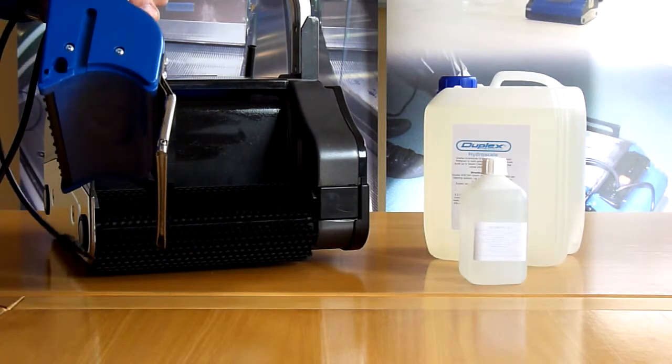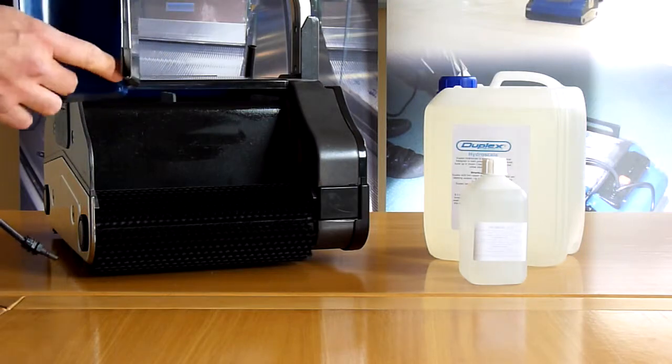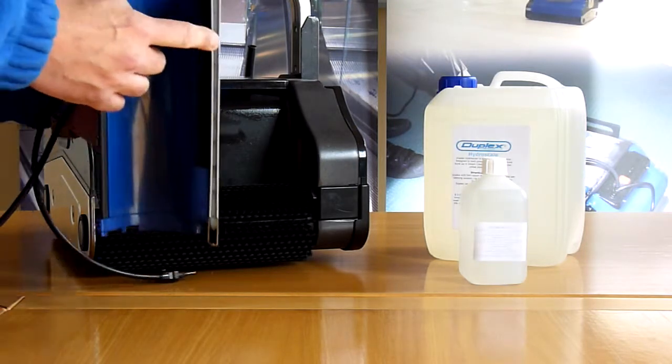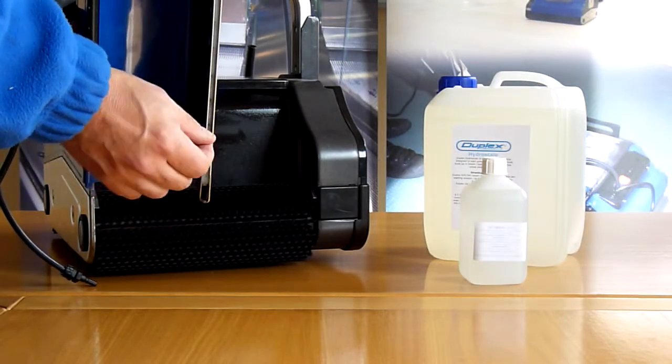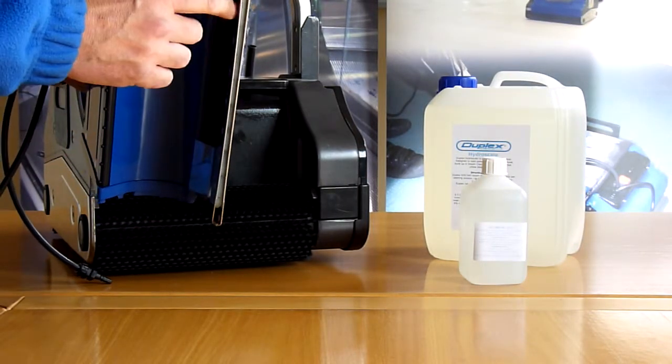On the bottom of the stainless steel plate are the outlets for the steam. This needs to be kept clean, and if they are blocked in any way, a small paper clip can be used to unblock the holes.